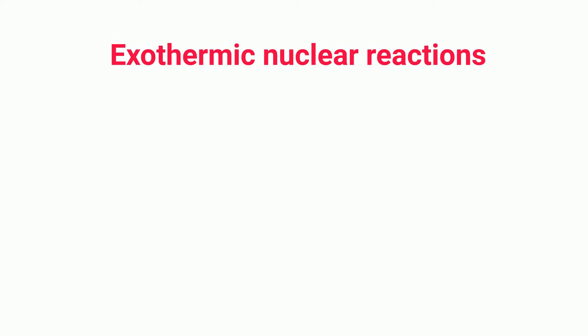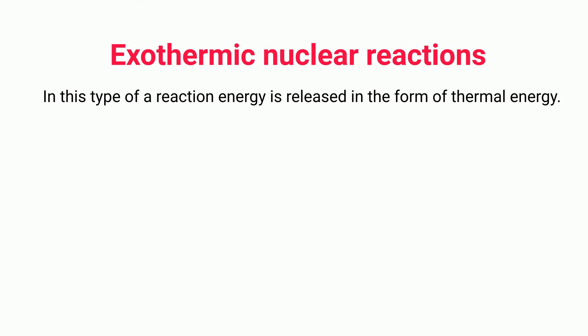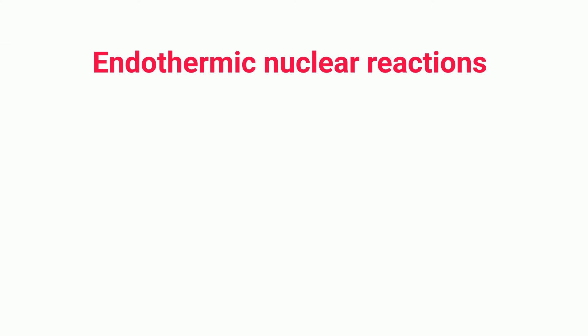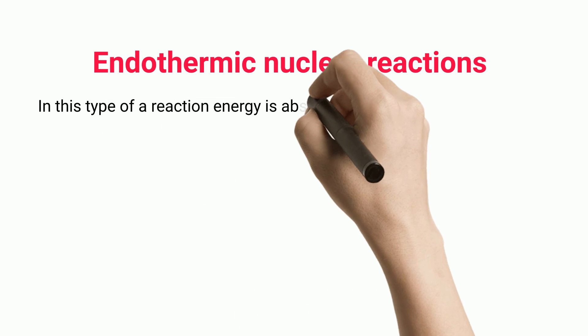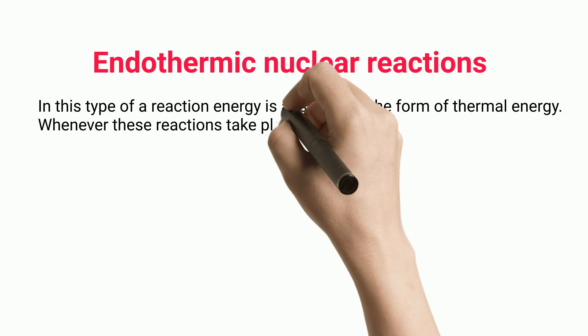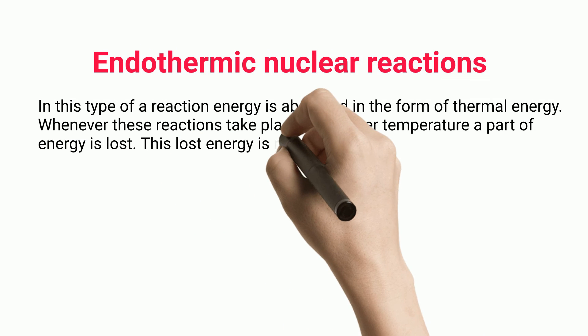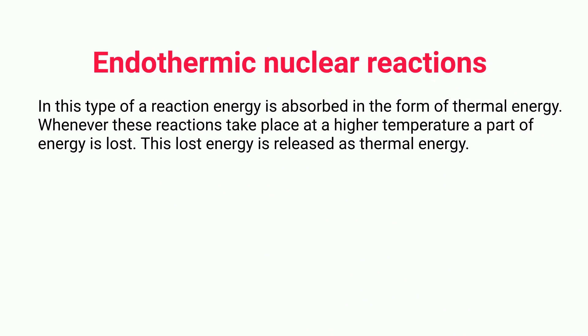In exothermic nuclear reactions, energy is released in the form of thermal energy. In endothermic nuclear reactions, energy is absorbed in the form of thermal energy. Whenever these reactions take place at a higher temperature, a part of energy is lost and this lost energy is released as thermal energy.